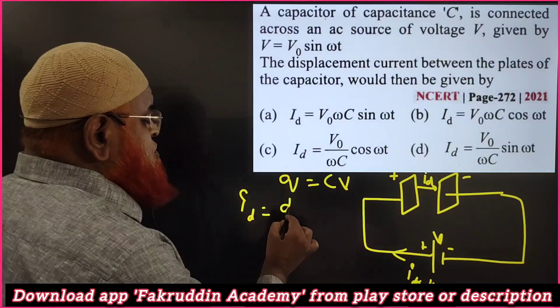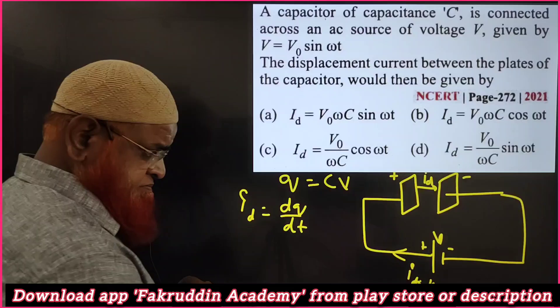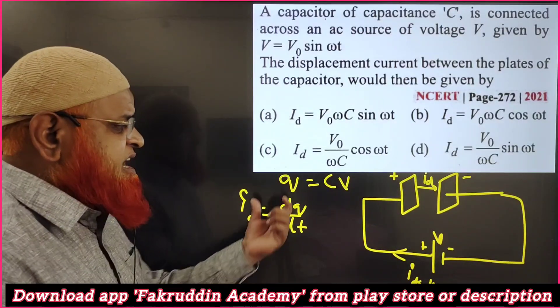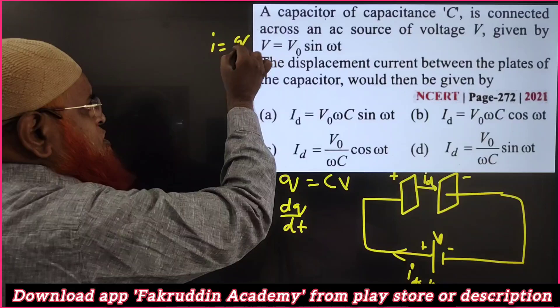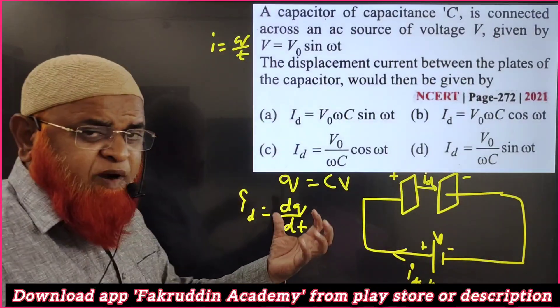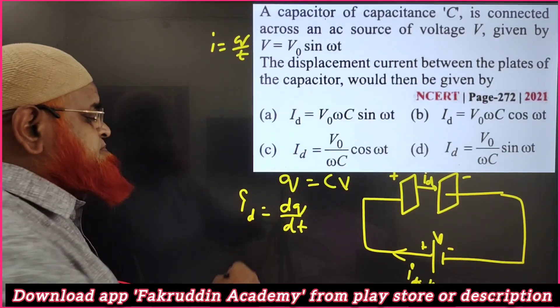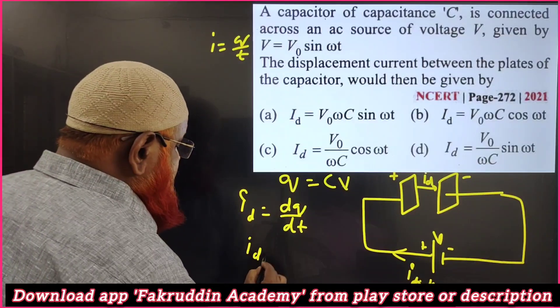Drift current, if you want to find out, you have to write dq/dt, differentiate charge with respect to time. Because you know I is equal to Q/T, but here you write dq/dt differentiation. And you write Id is equal to d/dt of C into V.